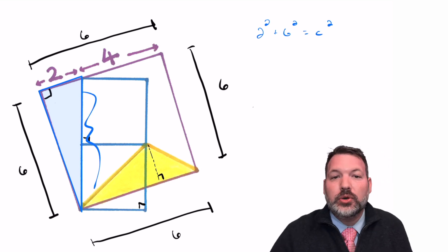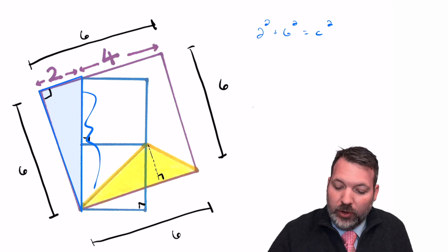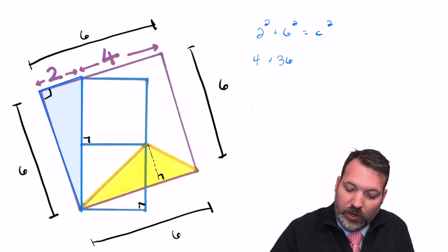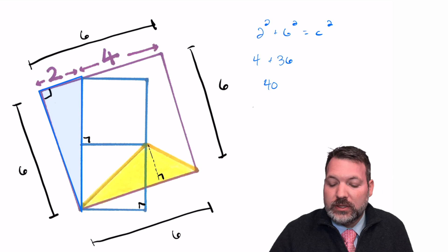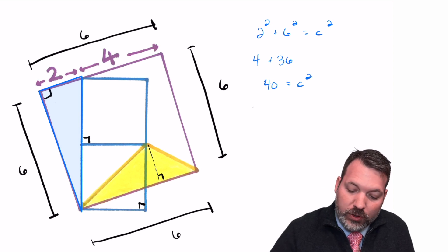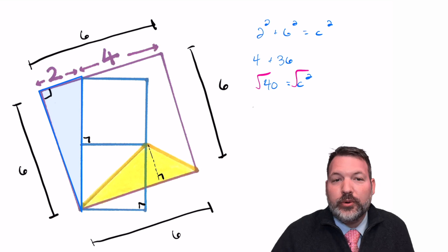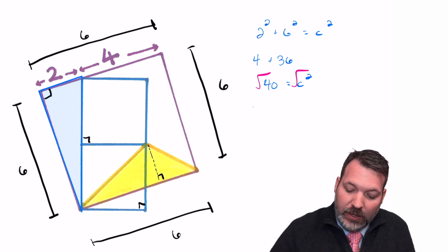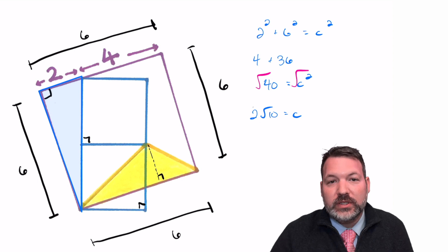where c is that total length across both of those smaller squares. 2 squared is 4, 6 squared 36, 4 and 36 make 40. And then of course, we want to take the square root here on both sides. And the square root of 40, once we simplify it, is the same thing as 2 times the square root of 10.